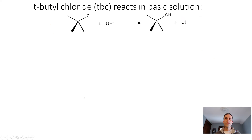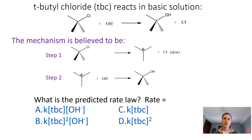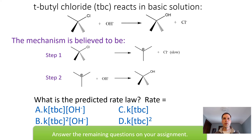Let's look at one more reaction to work on. T-butyl chloride reacts in a basic solution, and it's believed the mechanism is a two-step process. Go through and predict what the rate law is, choosing from the options provided. Answer that in D2L along with the remaining questions, and then you should be all set for class.